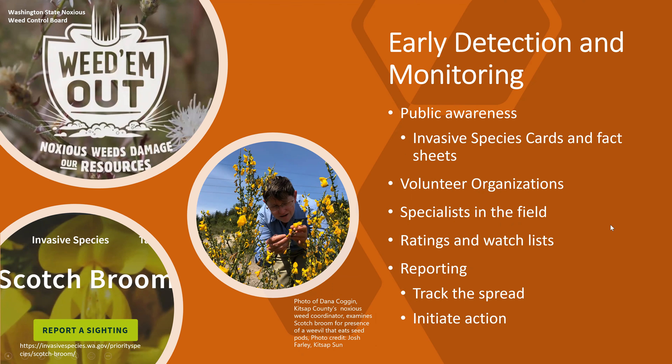For early detection, states have done huge marketing campaigns. The Washington State Noxious Weed Control Board has a reporting site for scotch broom and other invasive plants and animals on their website. California has invasive species cards and multiple states have fact sheets. There are also volunteer organizations that can help with early detection, and monitoring specialists in the field. As far as reporting, they have ratings and watch lists to track which plants are highly invasive and initiate action.